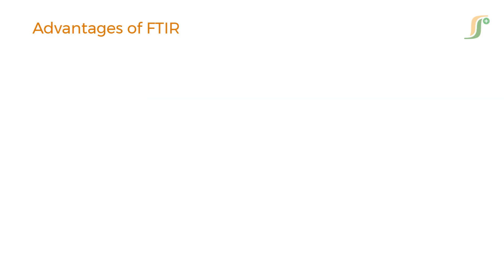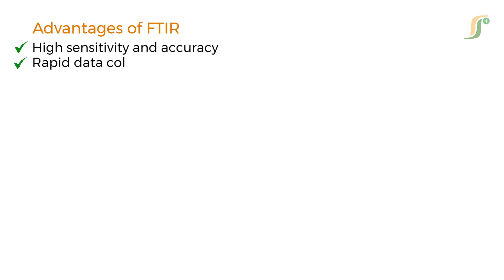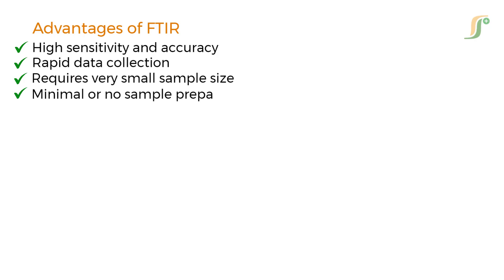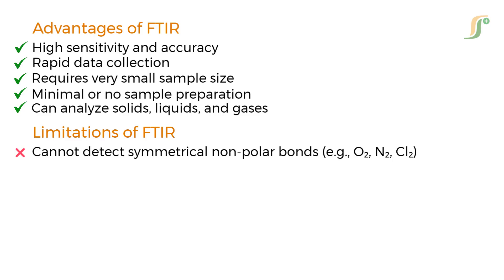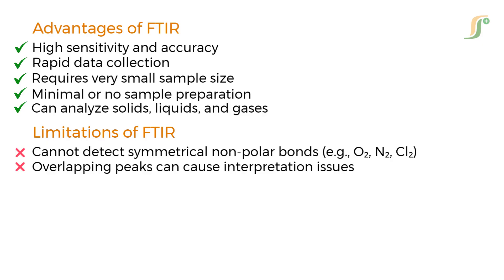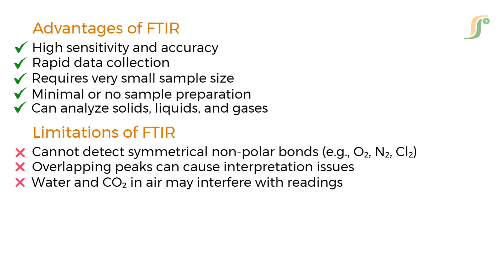Advantages of FTIR: FTIR is widely used in various industries because of its high sensitivity and accuracy, rapid data collection, very small sample size requirement, and minimal or no sample preparation. It can analyze solids, liquids, and gases, making it one of the most versatile tools in spectroscopy. Limitations include: it cannot detect symmetrical non-polar bonds like O2 or Cl2, overlapping peaks can cause interpretation issues, and water and CO2 in air may interfere with readings.